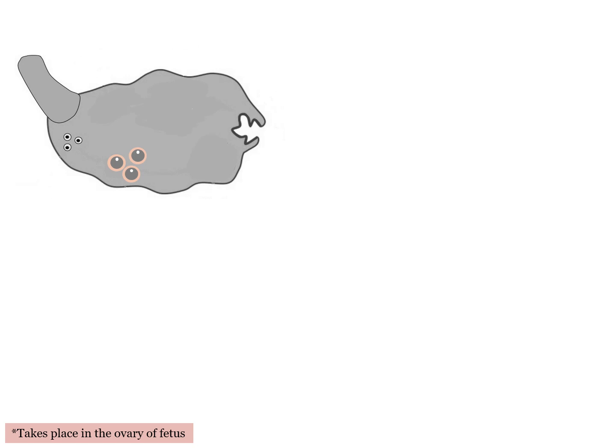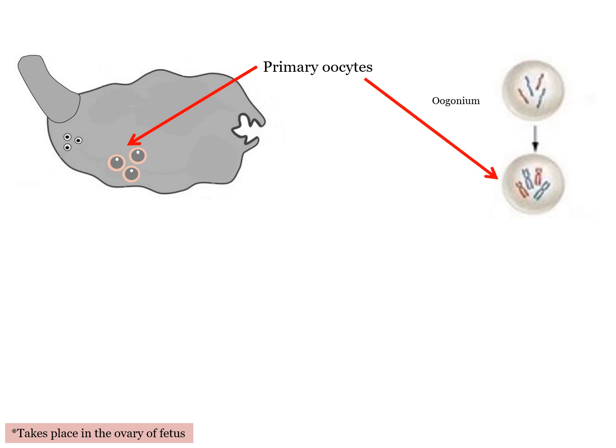So remember that oogenesis occurs in the ovary. In the multiplication phase, the primordial follicle cells will multiply, producing larger cells known as oogenia. This happens during fetal development.